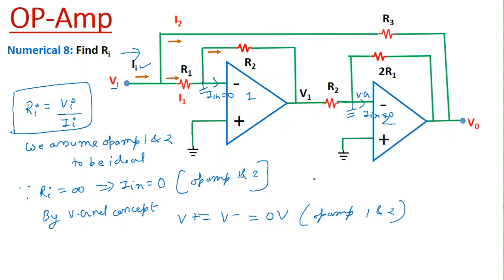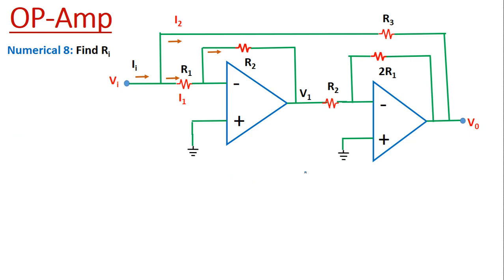Another thing we can see in the circuit diagram is that both operational amplifiers 1 and 2 are inverting operational amplifiers. This is because the non-inverting terminal is grounded and the inverting terminal is connected with the voltage. This is true for both op-amp 1 and 2.